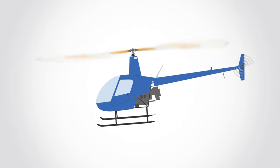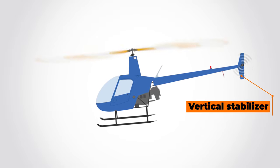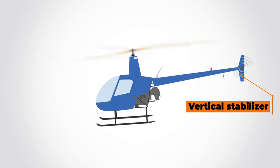In forward flight, the airflow around the vertical stabilizer helps counteract the torque. This allows forward flight with an inoperable tail rotor in some cases.